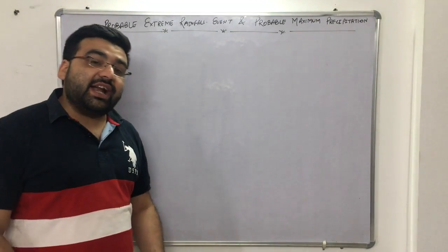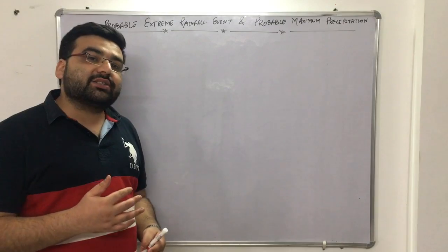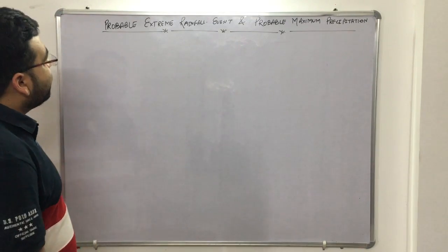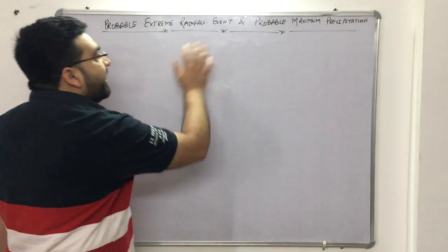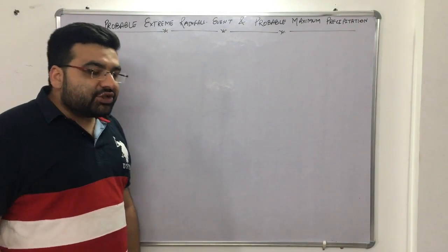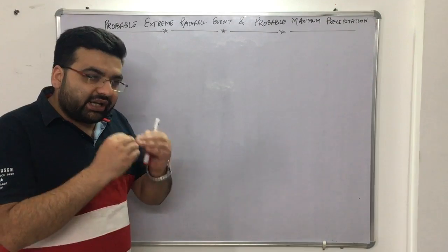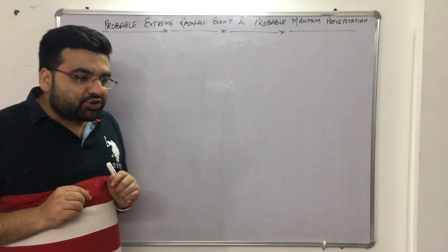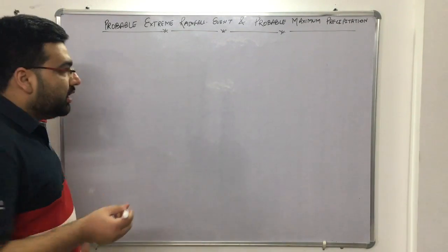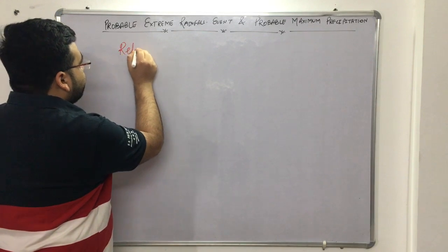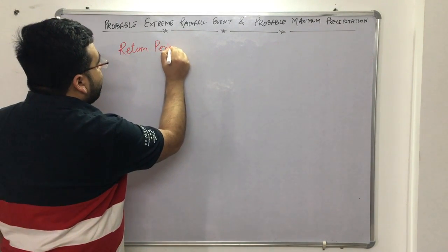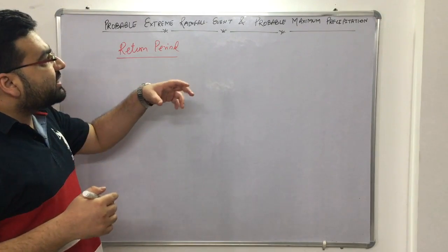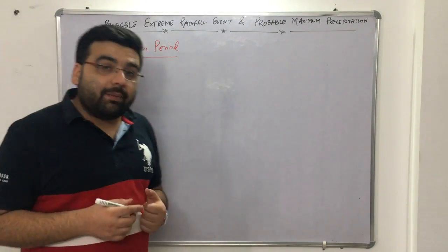After understanding many concepts and solving numericals on estimation of rainfall depth, we now come to a new topic: probable extreme rainfall events and probable maximum precipitation. If you understand probability from engineering mathematics, this concept is very easy. First, I will talk about the return period, but before that, let me explain why we need to study this topic.